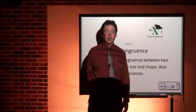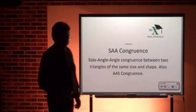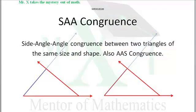Hi, Mr. X with glossary term SAA congruence. That's side angle angle. If we have two triangles and one side matches up and an angle matches up and another angle matches up as we're going around the triangle, we have congruent triangles.